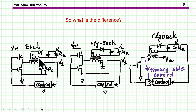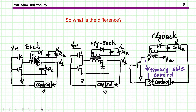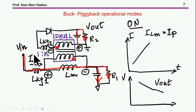So we have actually three configurations. We have the buck, or isolated buck, or piggyback. We have the flyback. And then we have the flyback. The question is: what is the difference between them? So let's have a look, first of all, at how the isolated buck operates.